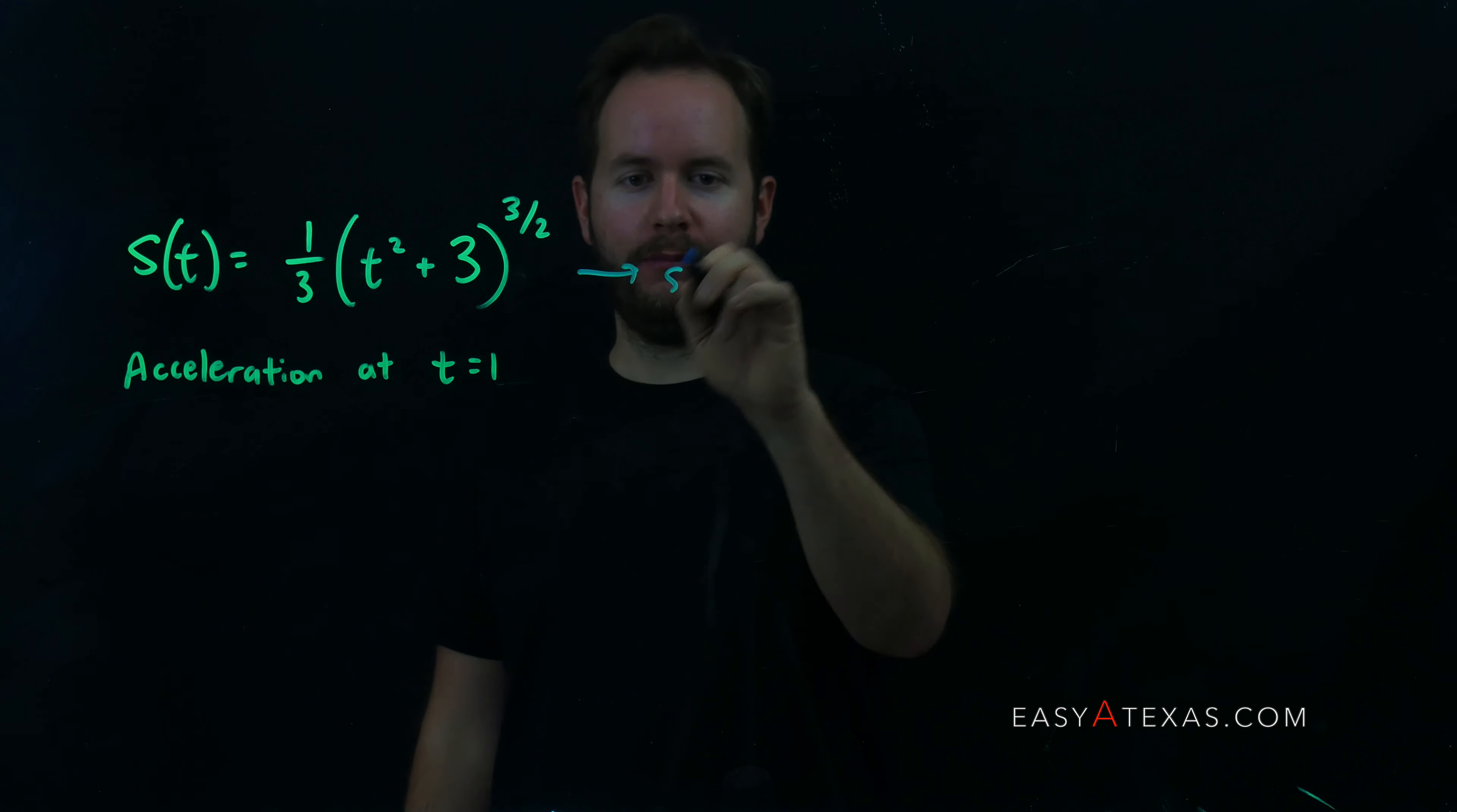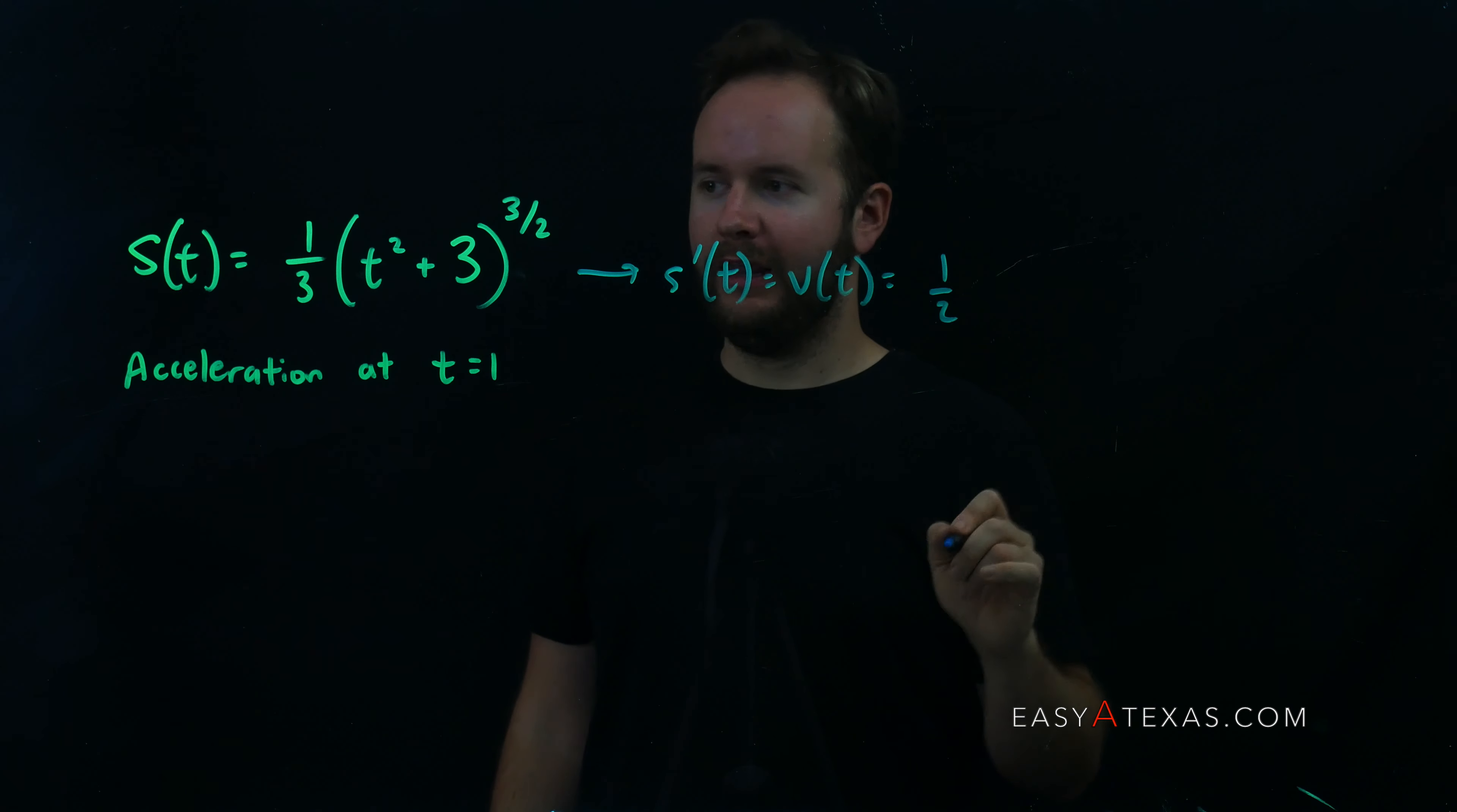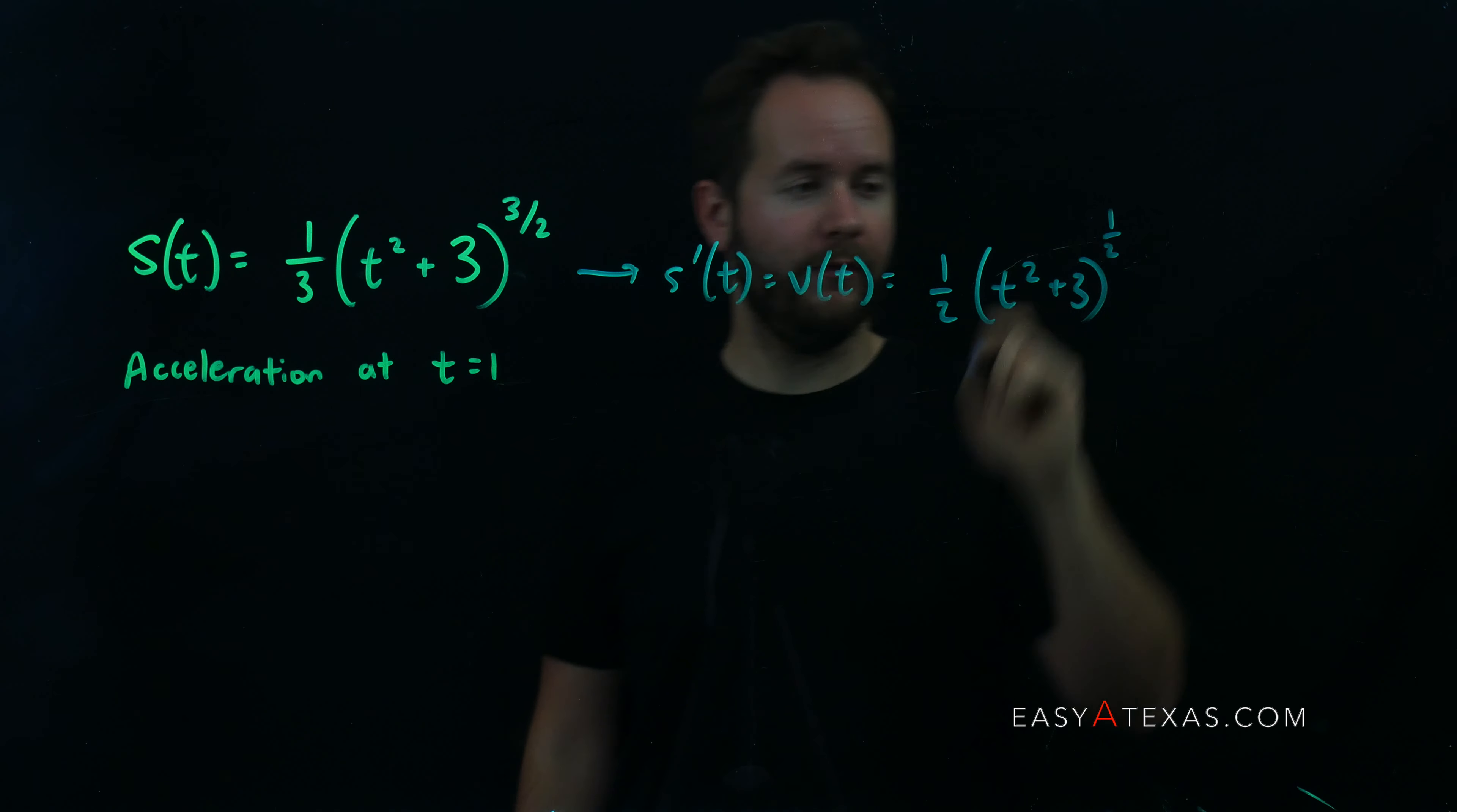So let's go ahead and get s prime of t, which again will be our velocity. Three halves comes down in front, three halves times one third is one half, and then we're going to say times t squared plus three, now to the power of one half. Three halves, so you subtract a power of one from that power you get one half.